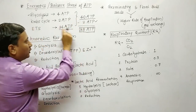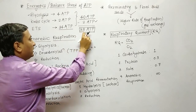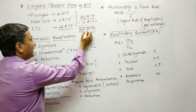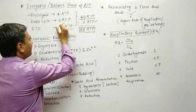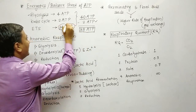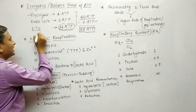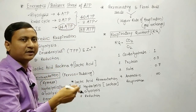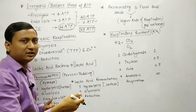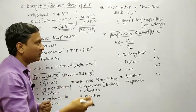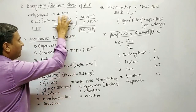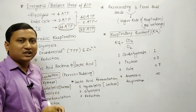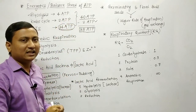That means one glucose molecule after aerobic respiration produces 38 ATP. So for one glucose we get a total of 38 ATP. Most of these come from ETS — oxidative phosphorylation, also called terminal oxidation or respiratory chain. Learn these values and the balance sheet from the textbook.